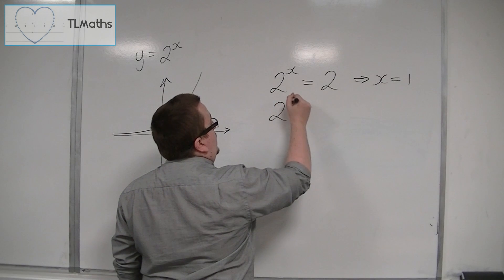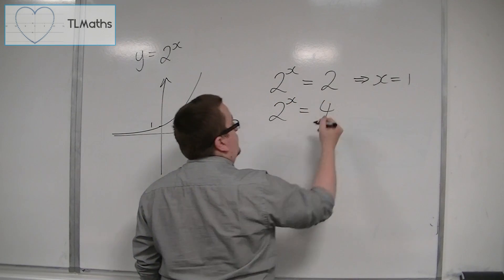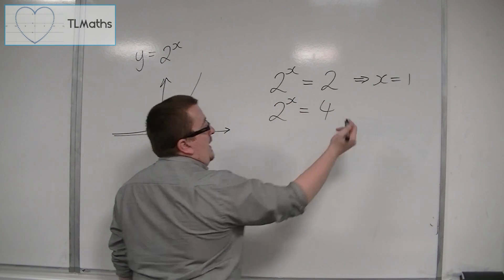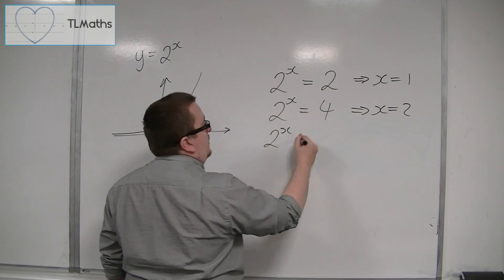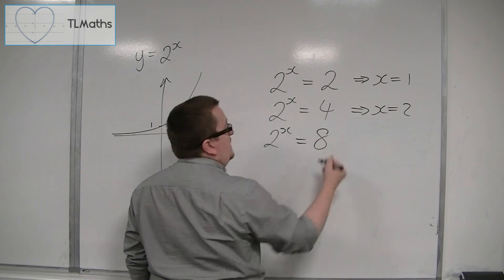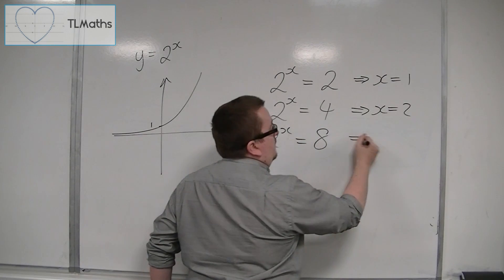Then I could also solve an equation like 2 to the x is equal to 4. Now, that's nice and easy, because I know that x has to be 2. And then if I was looking at 2 to the x is equal to 8, well, in that case, x would have to be 3.